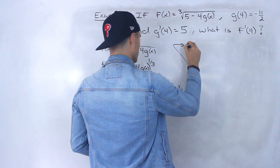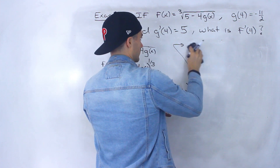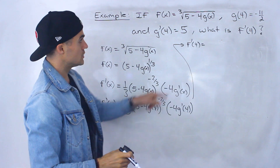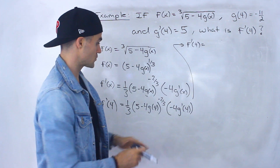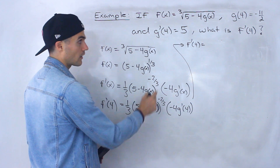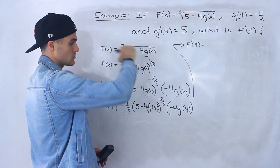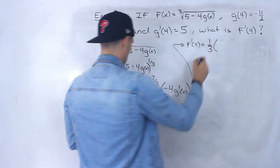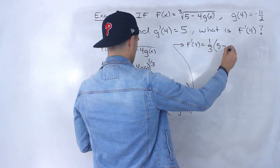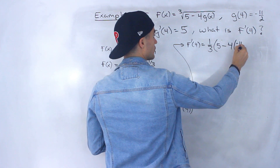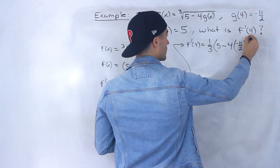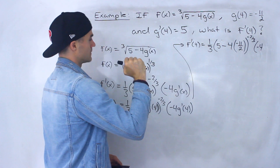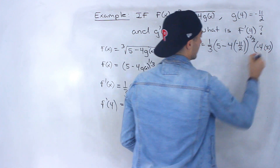Now we can plug in more values. We're given g of 4 equals negative 11 over 2, and g prime of 4 equals 5. So plugging those in, we'll have 1 over 3 times 5 minus 4 times negative 11 over 2, all to the power of negative 2 over 3, times negative 4 times 5.